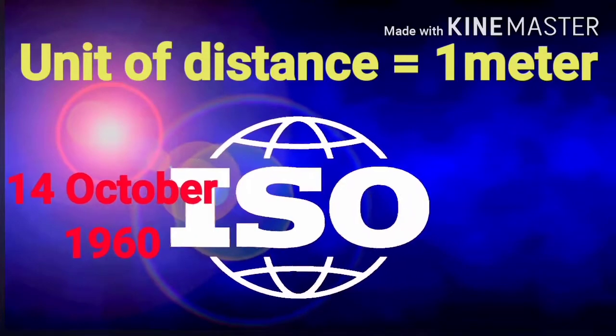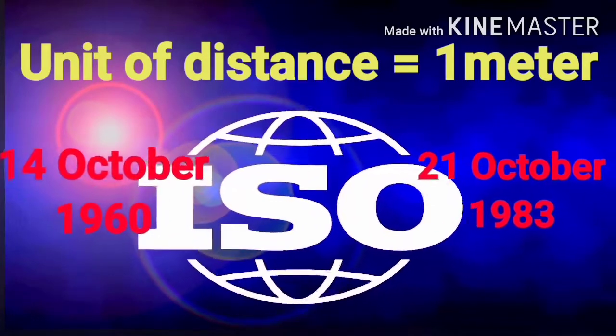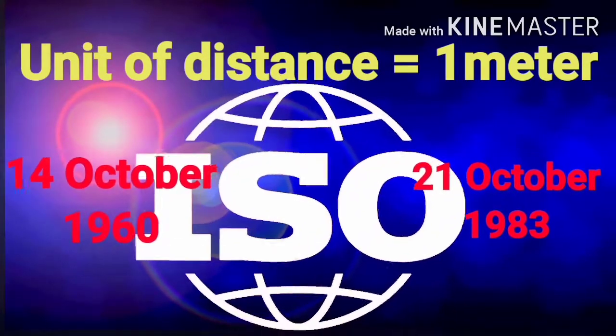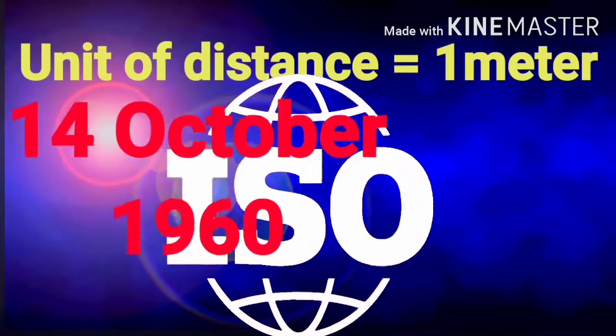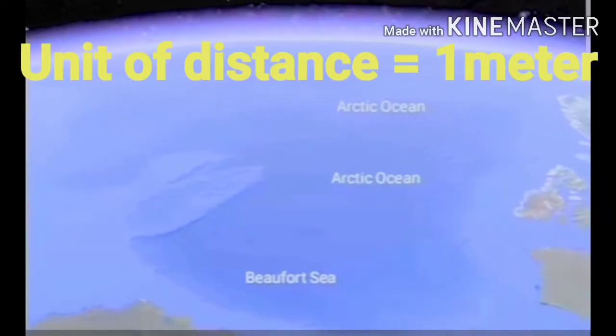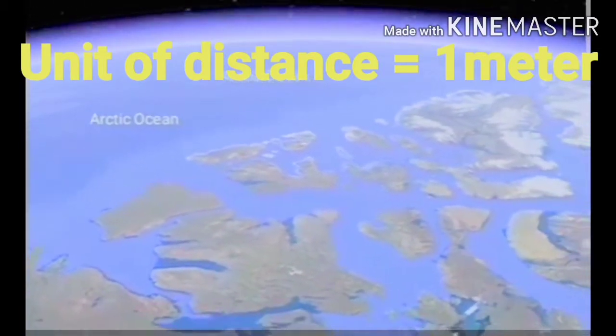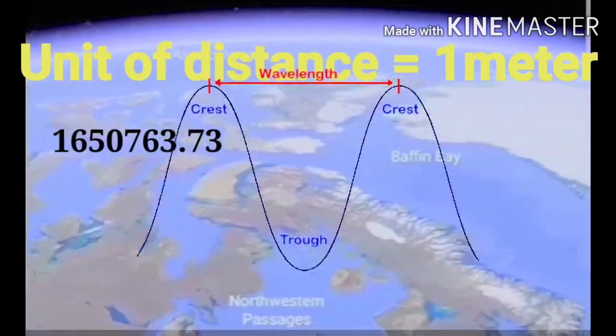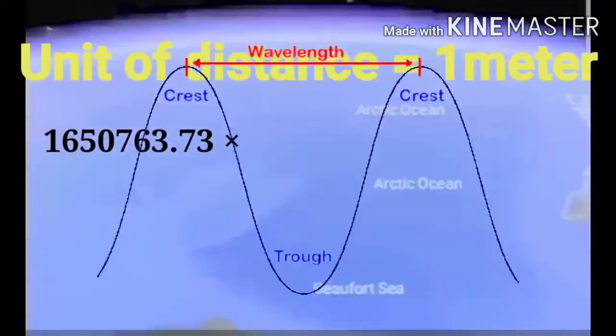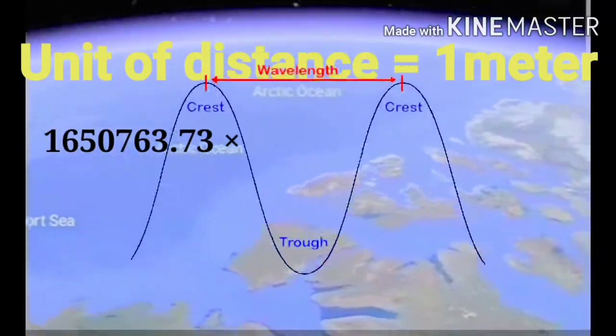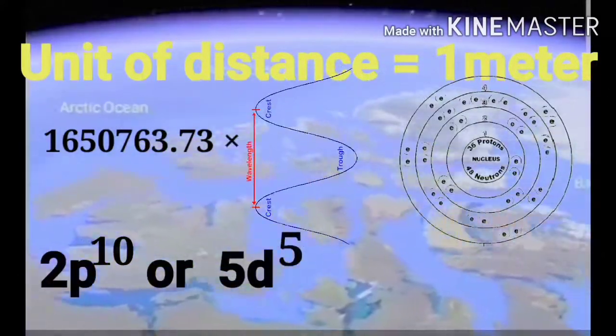The 1 meter distance was defined twice, on the 14th of October 1960 and the 21st of October 1983. On October 14th, 1960, it was defined that the distance in a vacuum that contained 1,650,763.73 wavelengths at 2p10 and 5d5 quantum energy levels of krypton-86 atoms is called 1 meter.